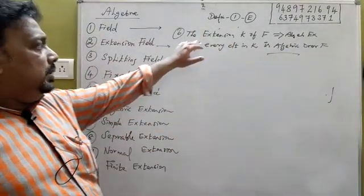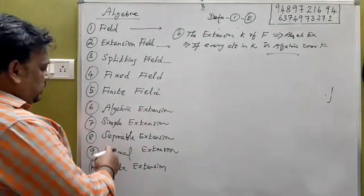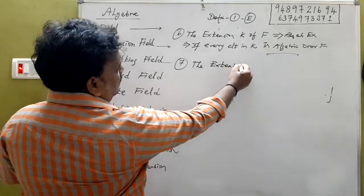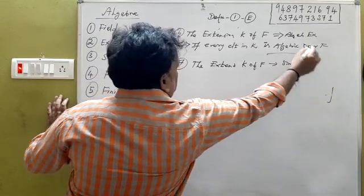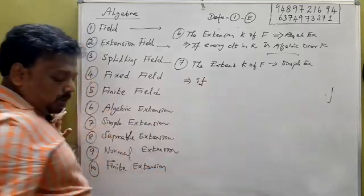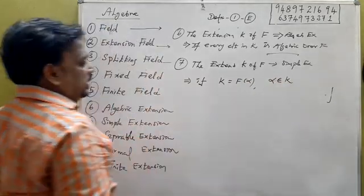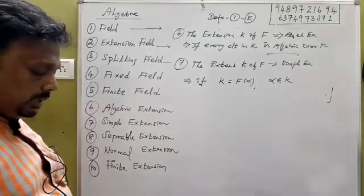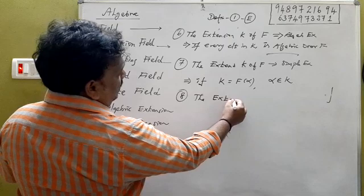Simple extension: the extension K of F is a simple extension if K equals F(alpha) for some alpha belonging to K. That is the condition for a simple extension.